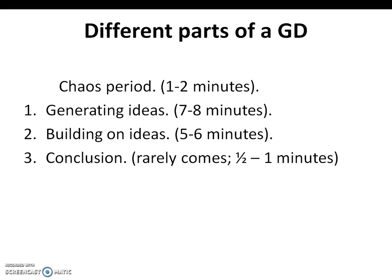Parts of a GD: The first 2 minutes would be an opening or start. The next 7 to 8 minutes involve generating ideas about the topic. The following 5 to 6 minutes involve building on ideas about the topic. Finally, closure of the topic, which rarely takes half a minute to one minute.